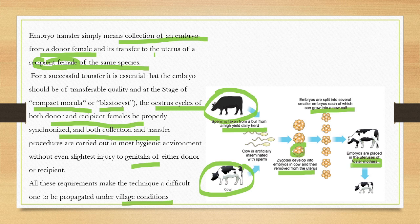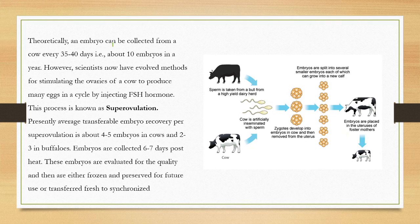The embryos are then placed in the uterus of a foster mother. Normally, a single embryo develops per cycle and an embryo can be collected from a cow every 32 to 40 days, yielding about 10 embryos per year.